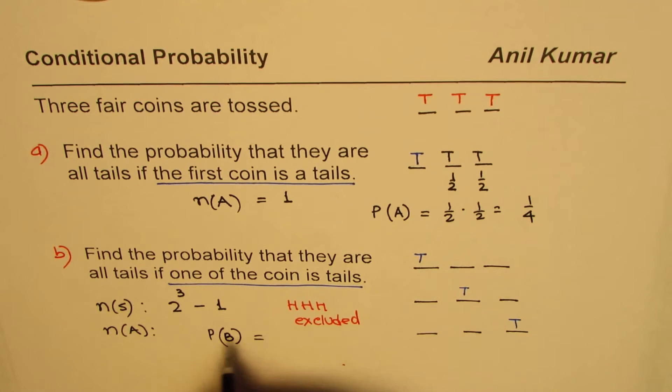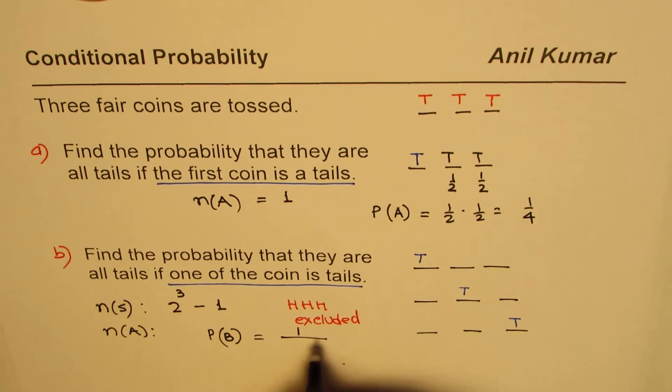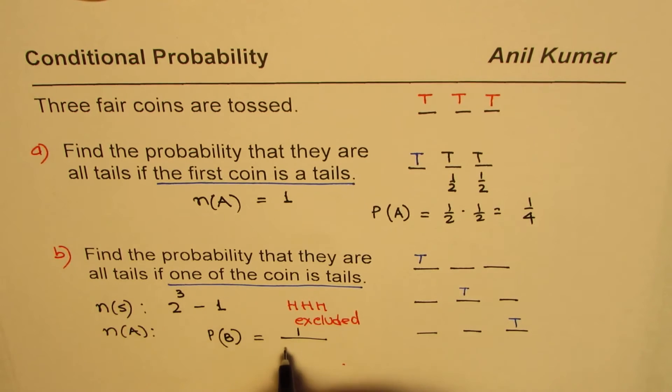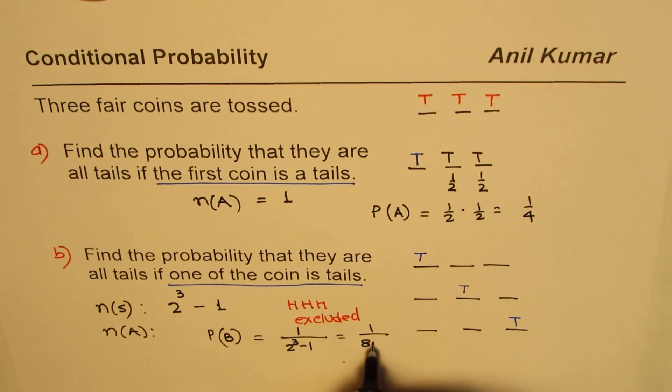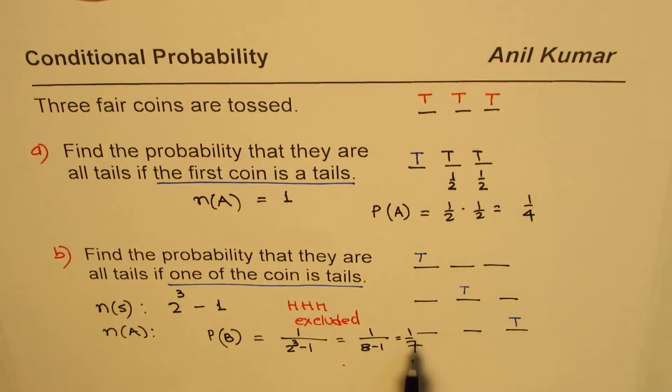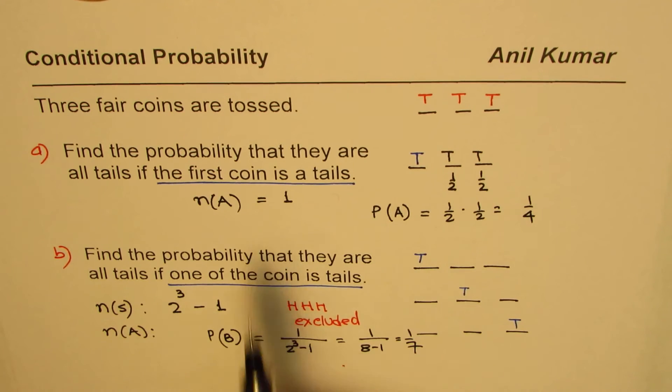Therefore the probability in this condition, let me call this as B, is equal to one over two to the power of three minus one, which is one over eight minus one, or one over seven. So the probability here is one over seven, and the first case